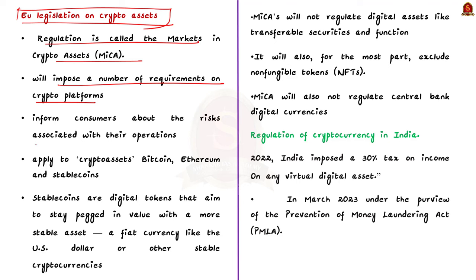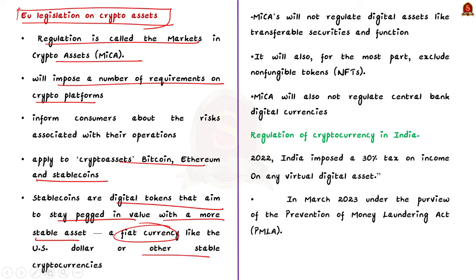MiCA legislation will apply to crypto assets like Bitcoin, Ethereum, and stablecoins. Crypto assets can be understood as a digital representation of a value or right that uses cryptography for security, in the form of a coin, token, or other digital medium that may be transferred and stored electronically using distributed ledger technology or similar technology. A stablecoin is a digital token that aims to stay pegged to a value of more stable assets, such as a fiat currency like the US dollar. MiCA establishes three new rules for three types of stablecoins: asset reference tokens linked to multiple currencies, commodities, or cryptocurrencies; e-money tokens linked to a single currency; and utility tokens intended to provide access to goods or services supplied by the token issuer.